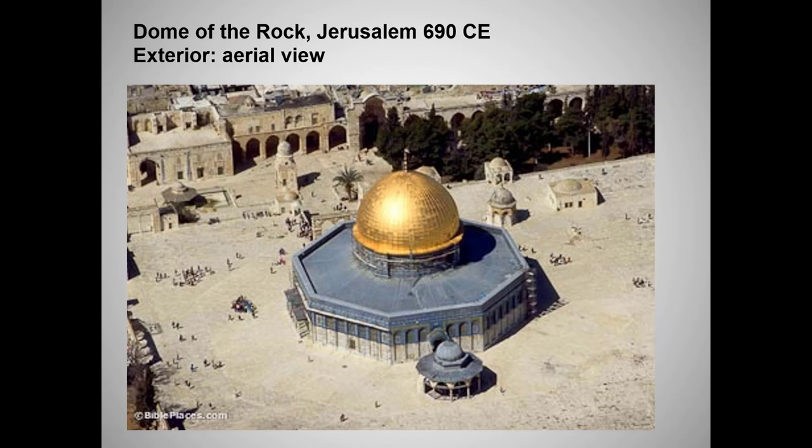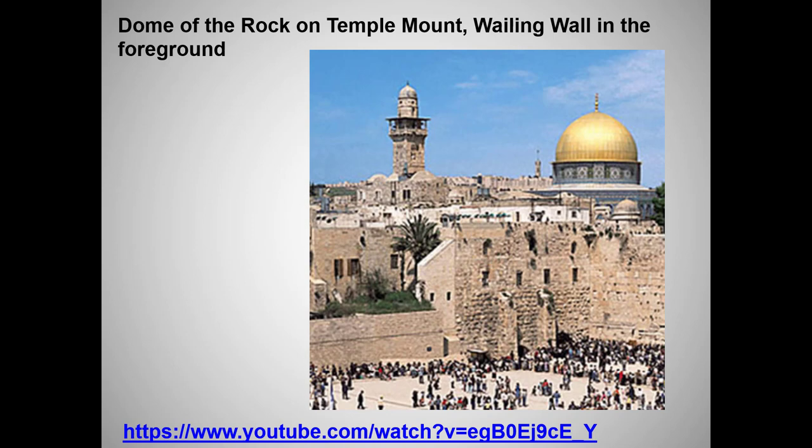This aerial view makes it easier to see the Dome of the Rock's octagonal construction. The Temple Mount has a complicated history as a site holy to — and fought over by — Jews, Christians, and Muslims. In the foreground you see the Wailing Wall, the last remnant of the destroyed Jewish Temple and a very sacred site to Jews. A video gives you some sense of the conflict that has arisen over this structure.